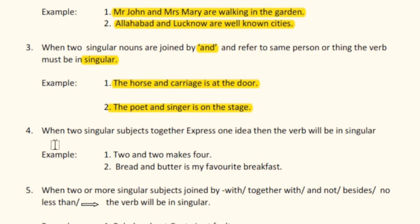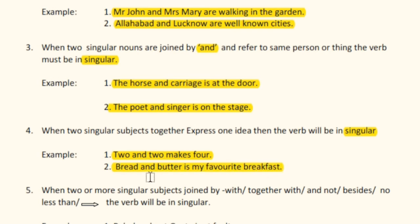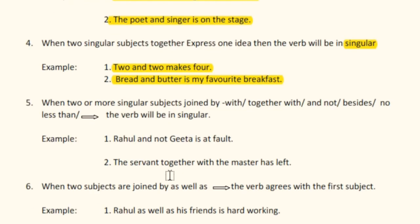Rule number four: when two singular subjects together express one idea, the verb will be in singular. For example, 'Two and two makes four' and 'Bread and butter is my favorite breakfast.' In both sentences the subjects express one idea, so the singular verbs 'makes' and 'is' are used.